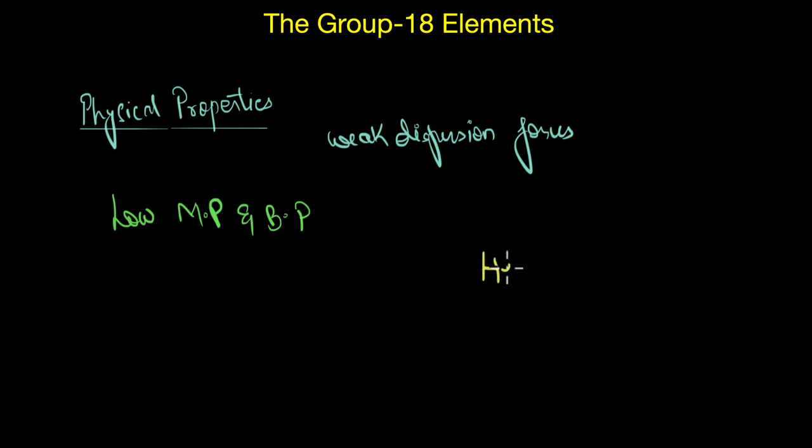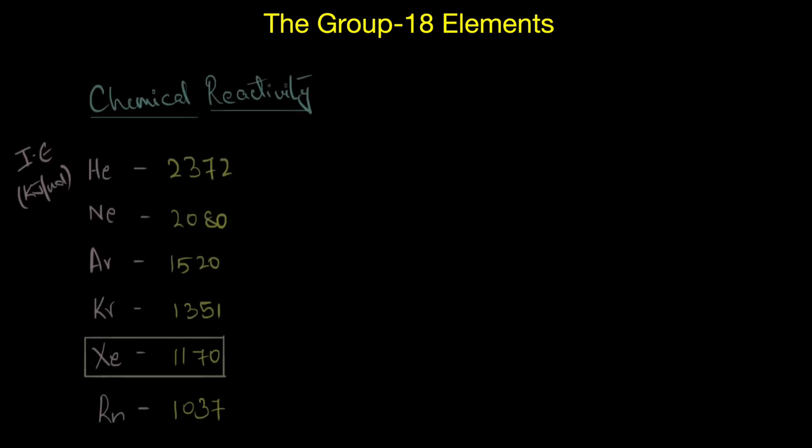In fact, helium has the lowest boiling point of any known substance and has this unique ability to diffuse through materials like glass, rubber, plastic, and so on. Obviously, as you can imagine, this makes it very difficult to work with helium in laboratories. Now even though the noble gases are chemically inert and unreactive, we still have a few compounds of these elements, especially that of xenon.